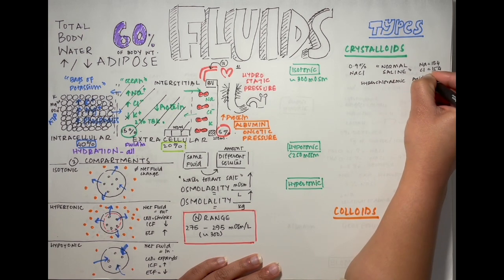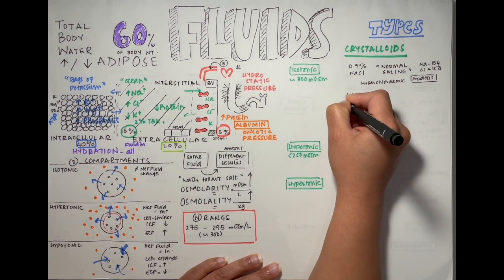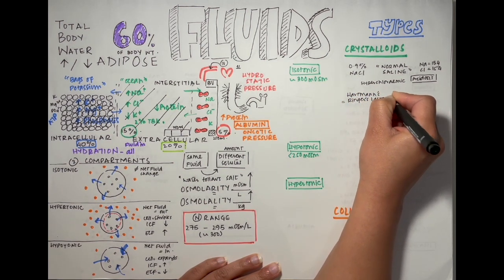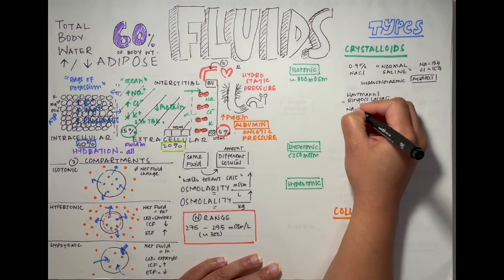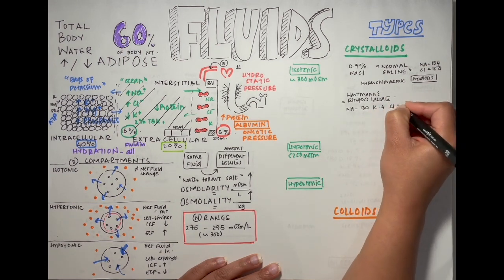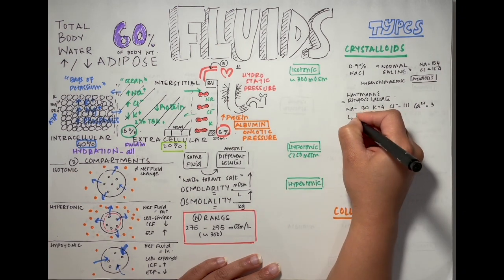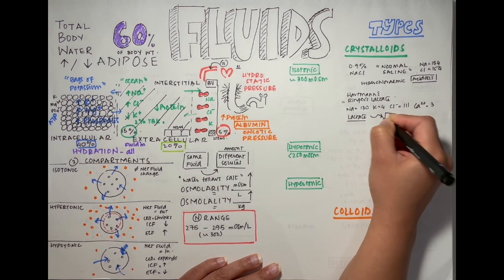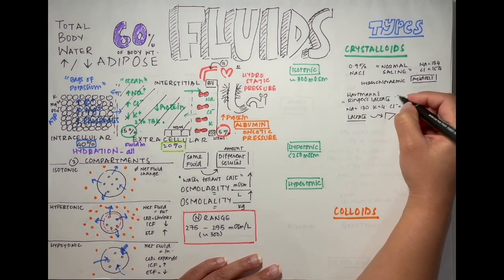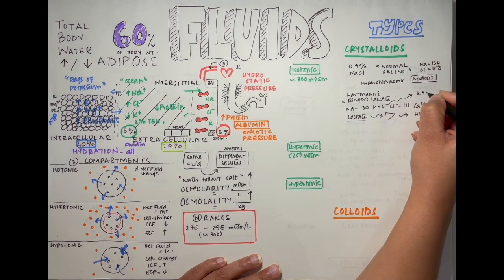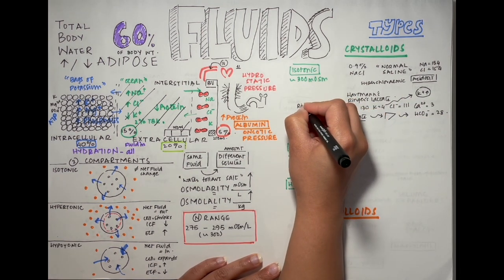The bad thing with this is that too much of it can cause hyperchloremic acidosis and sodium really burdens your kidneys. The next is Hartmann's, also known as Ringer's lactate. This is the surgeon's fluid. It is very physiologically close to plasma. It has 130 millimoles of sodium, 4 of potassium, 111 of chloride, and 3 of calcium. There's lactate present in it which is metabolized by the liver and turns into bicarb of which there is 28 millimoles per liter.